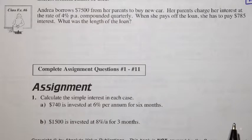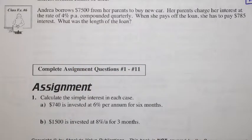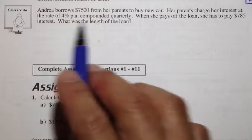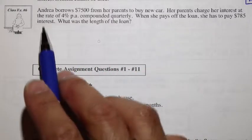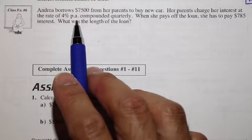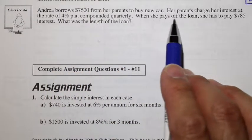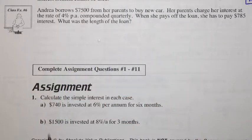We have Andrea who borrows $7,500 from her parents to buy a new car. Her parents charge her interest at the rate of 4% per annum, compounded quarterly. When she pays off the loan, she has to pay $785 interest. What is the length of the loan?